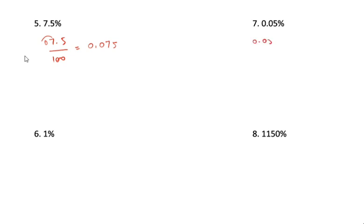Here 0.05 divided by 100. There are 2 places — 1 is there, another 2. So the point moves. The answer is 0.0005.